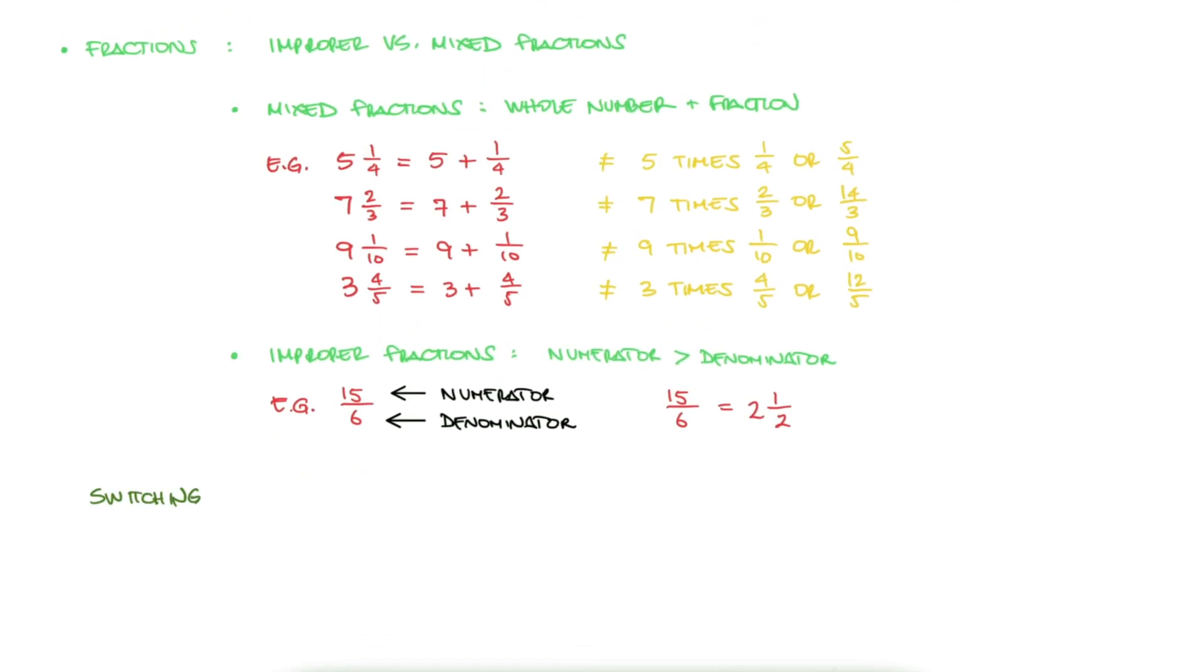Every time the numerator is larger than the denominator, we call this an improper fraction, and improper fractions can always be presented as mixed fractions. To switch from improper to mixed, you simply divide. For example, if we have 20 over 3, we know that 6 threes fit in 18, and the additional 2 that remain to get to 20 should also be divided by 3. Therefore, 20 over 3 is 6 and 2 thirds.